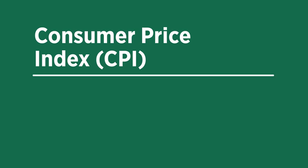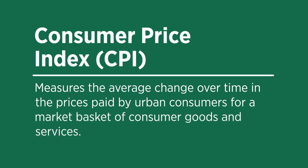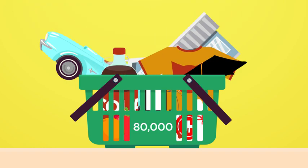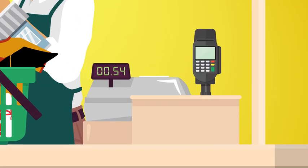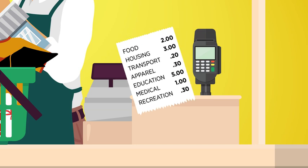The most widely reported measure of inflation is the Consumer Price Index, or CPI. The CPI measures the average change over time in the prices paid by urban consumers for a market basket of consumer goods and services. The current market basket includes about 80,000 items consumers buy on a regular basis. Data collectors visit businesses to collect and record the prices of the items in the basket.